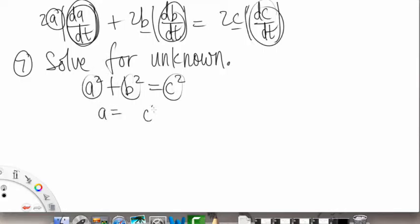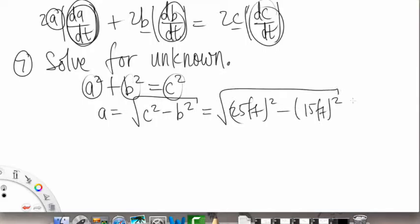So A is going to equal C squared minus B squared, and then square rooted. So C was equal to 25 feet, and then that'll be squared minus B, which is 15 feet, and that's squared, and square root of that. So this will turn out to be 20 feet foot length. So now we know our A, we know B, we know C, we know dB/dt, and dC/dt.